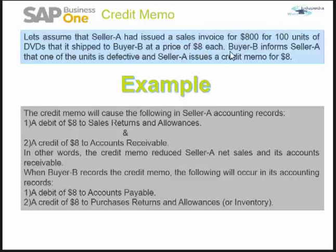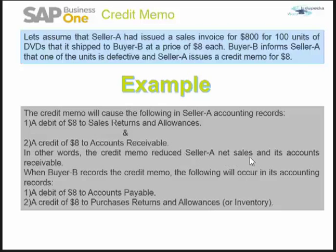Seller A has issued a sales invoice of $800 for 400 units of DVDs shipped to buyer B at a price of $8 each. Buyer B informs seller A that one of the units is defective, and seller A issues a credit memo of $8. The credit memo will cause the following in seller A's accounting records: a debit of $8 to sales returns and allowances, and a credit of $8 to accounts receivable. In other words, the credit memo reduced seller A's net sales and its accounts receivable. When buyer B records the credit memo, the following will occur: a debit of $8 to accounts payable and a credit of $8 to purchase returns and allowances or inventory.